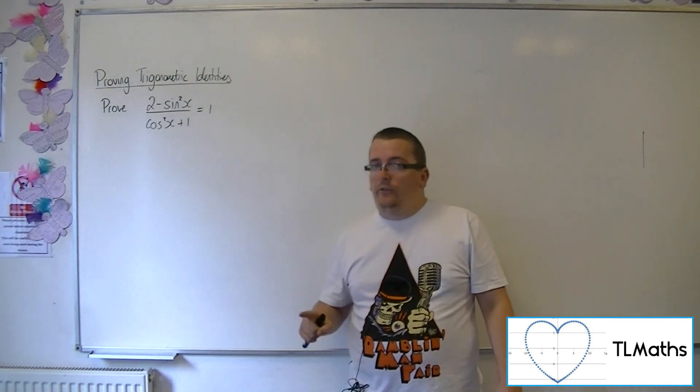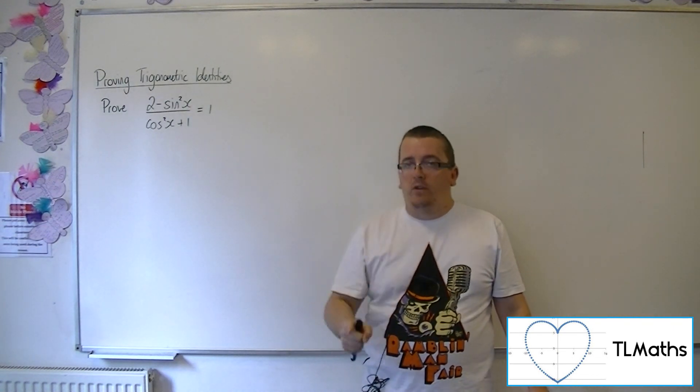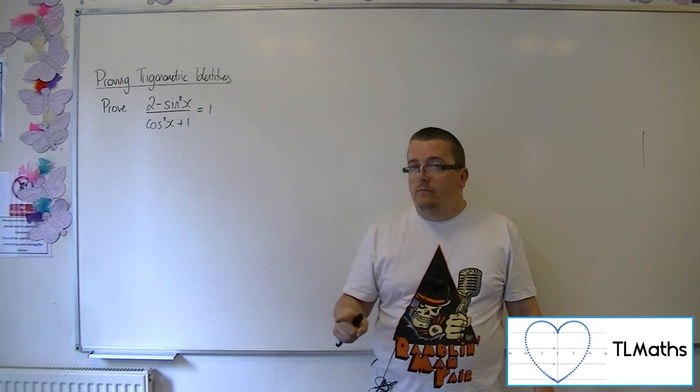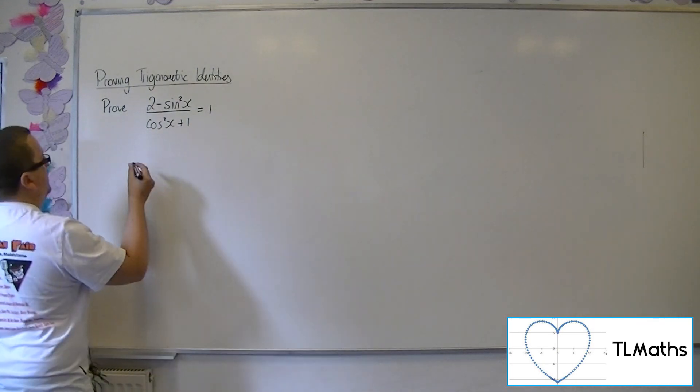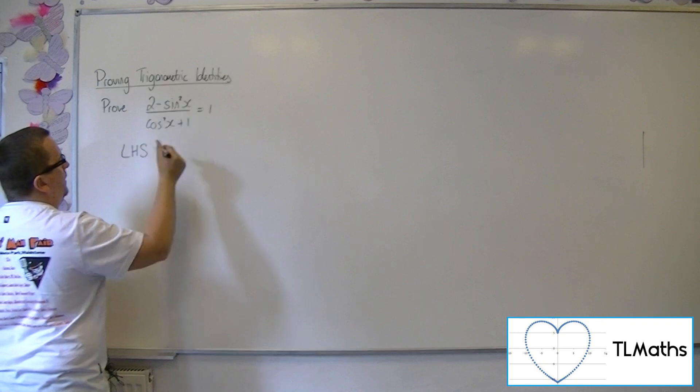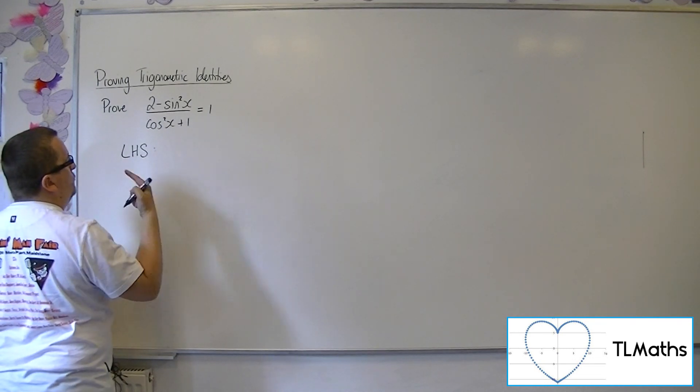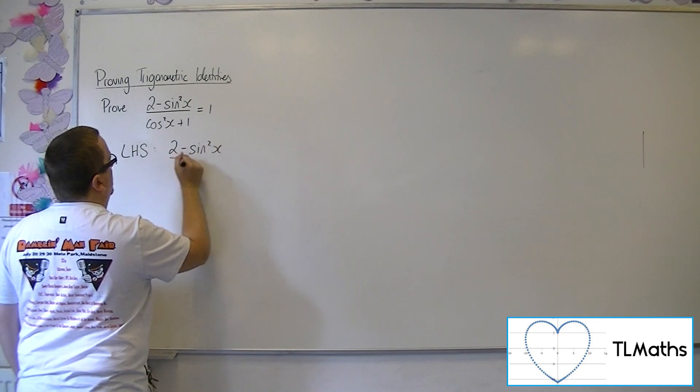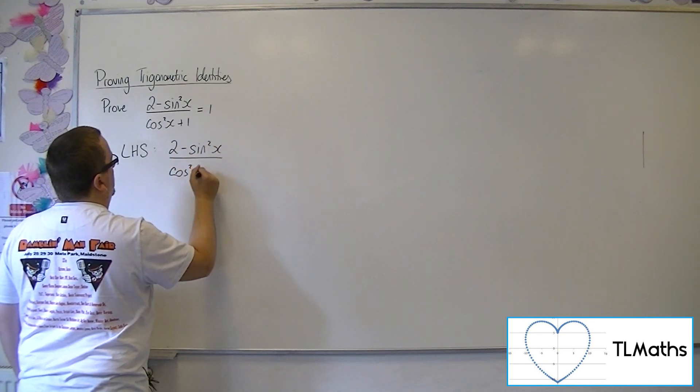Now, it makes sense to start with the trickiest-looking side. There's not much I can do with 1. So let's start with the left-hand side. Make it clear to the examiner exactly what you're doing. So I'm using LHS to represent left-hand side. So 2 minus sine squared over cos squared plus 1.